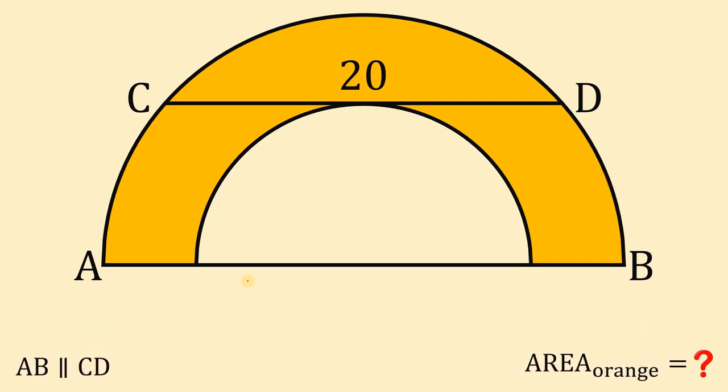Our goal is to find the area shaded in orange. To answer this question, we're going to first take note of the center of these two semicircles, and then connect this center to the point of tangency of chord CD like this.